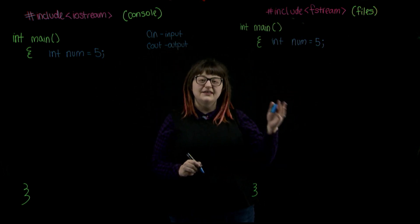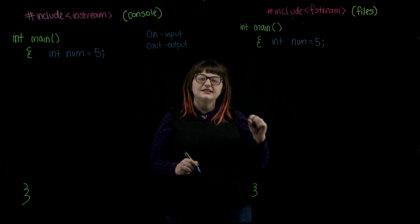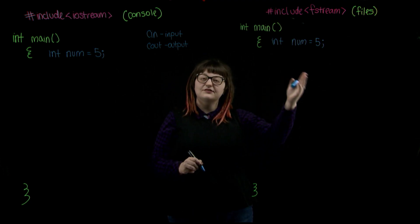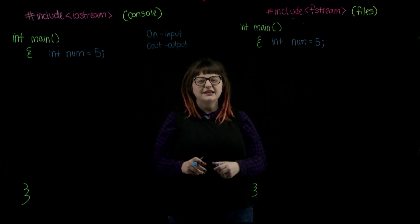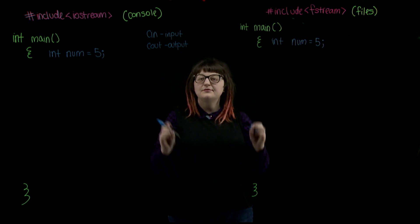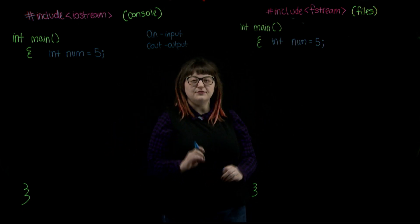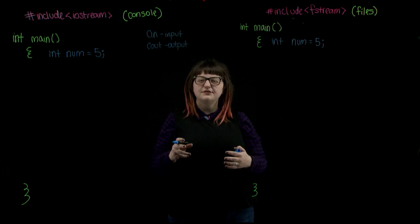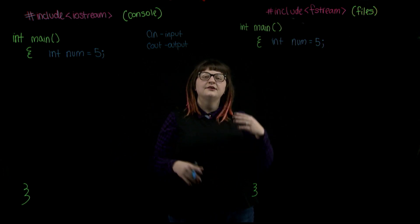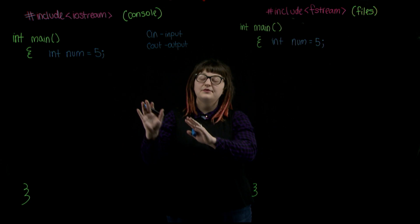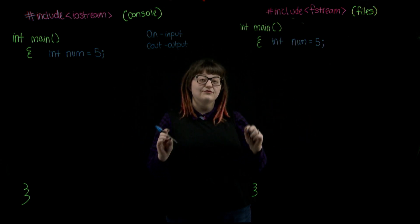In our new library, the fstream library, F stands for file, so it is our file stream library. And it's going to handle the input and output too, but using files instead of our console. So because of that, the terminology that we're going to use throughout is a little bit different. With iostream, we have input and output. But with files, we have read and write.